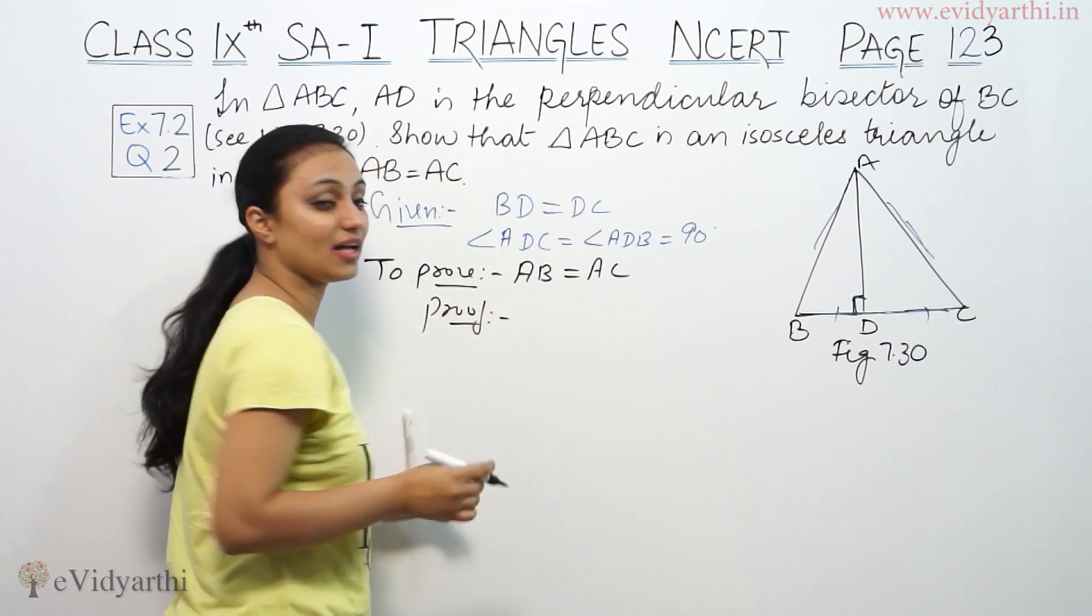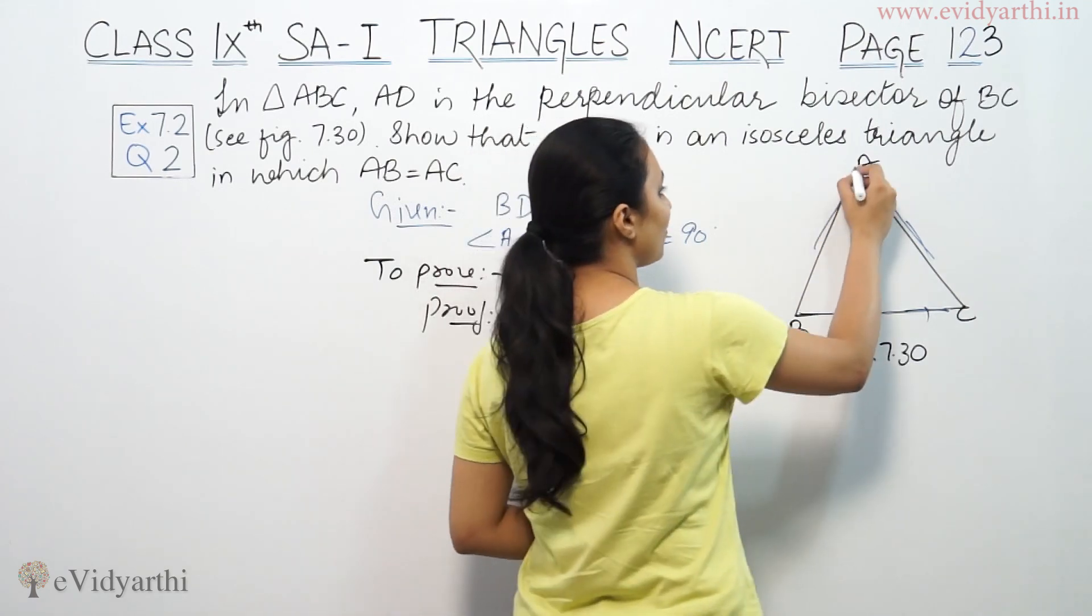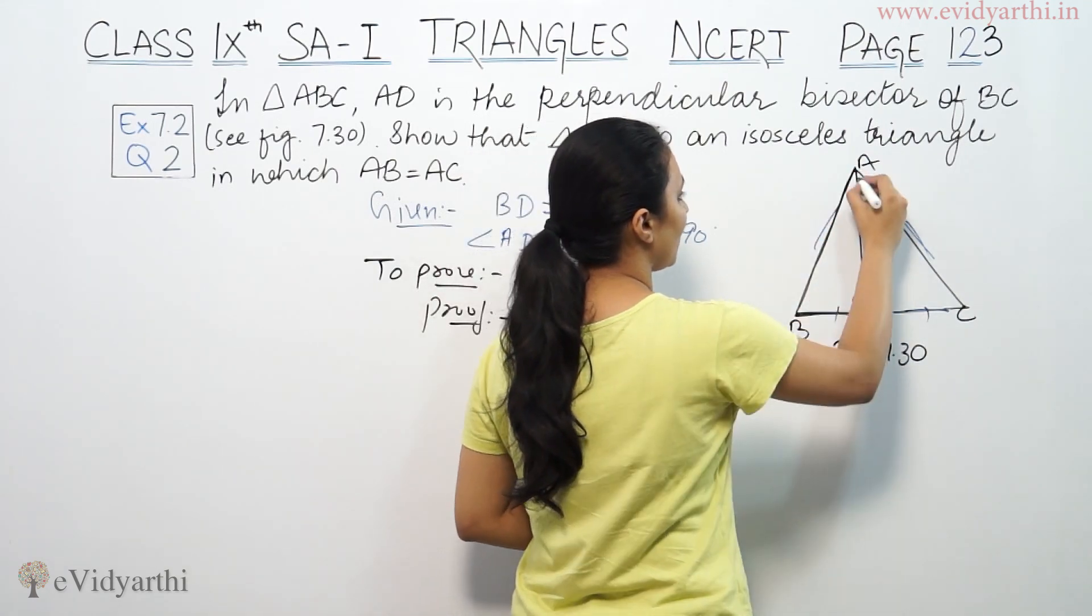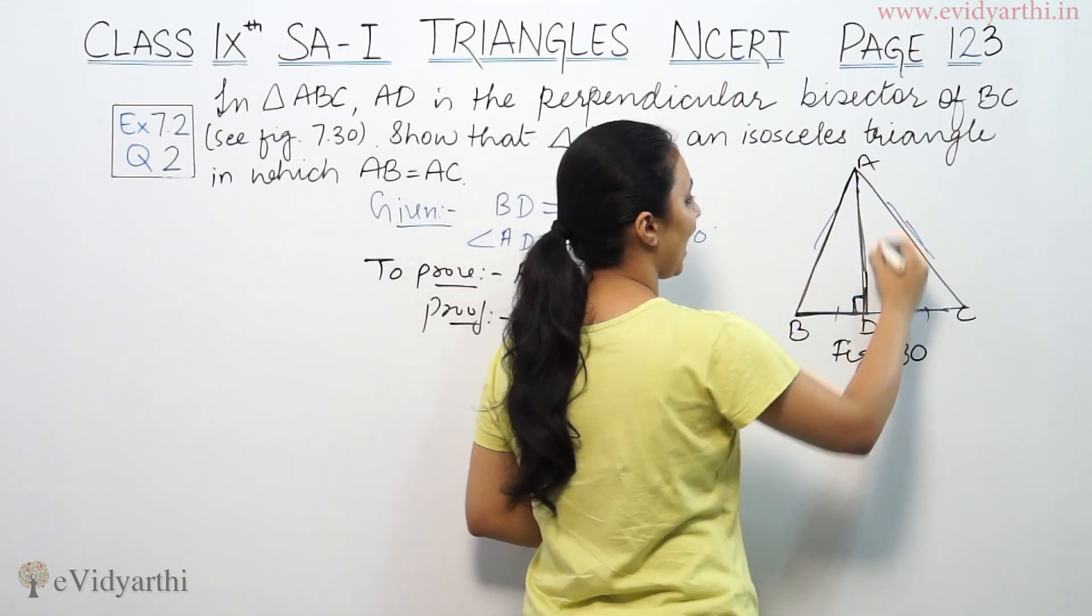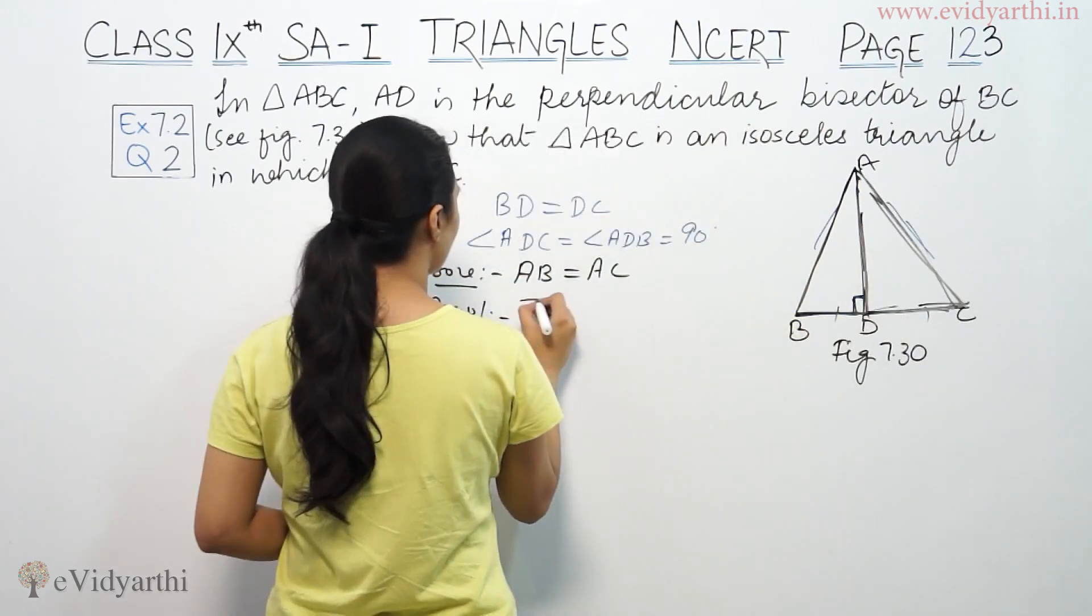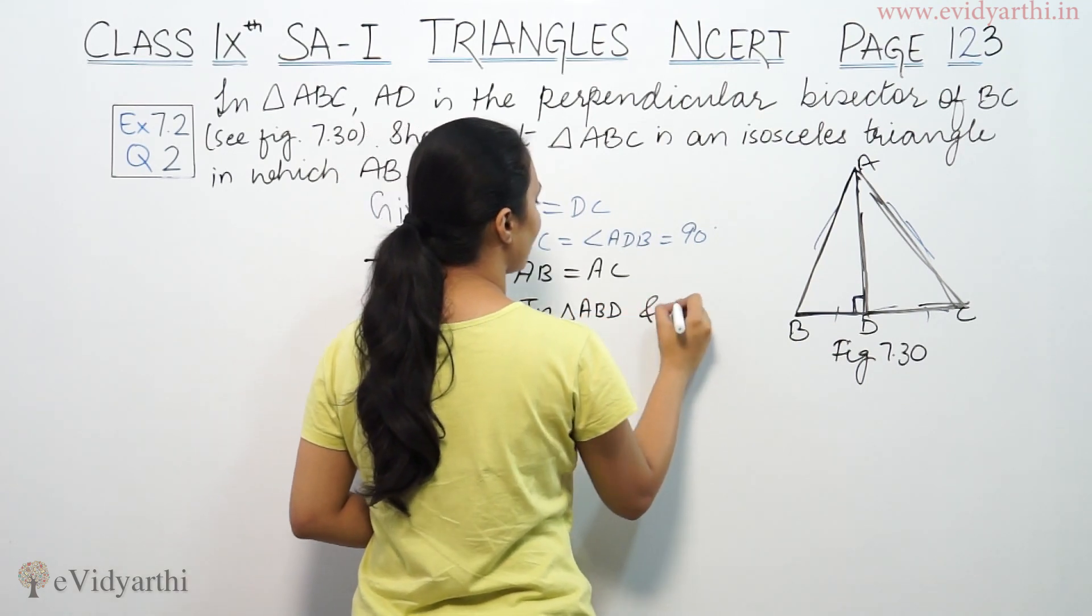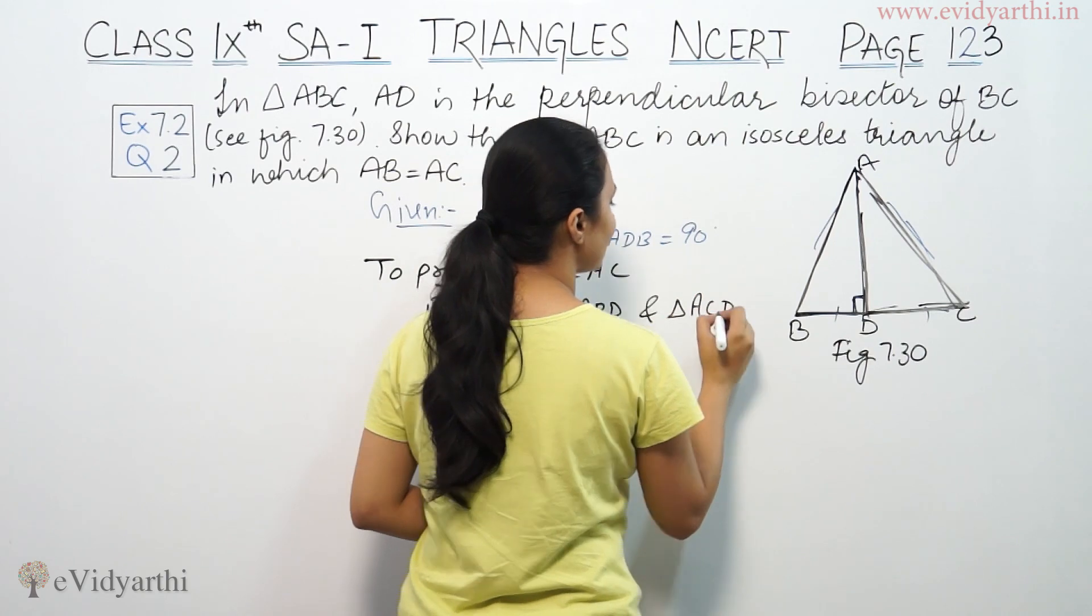To prove AB is equal to AC, we will pick these triangles. So in triangle ABD, this triangle, and triangle ACD, this triangle.